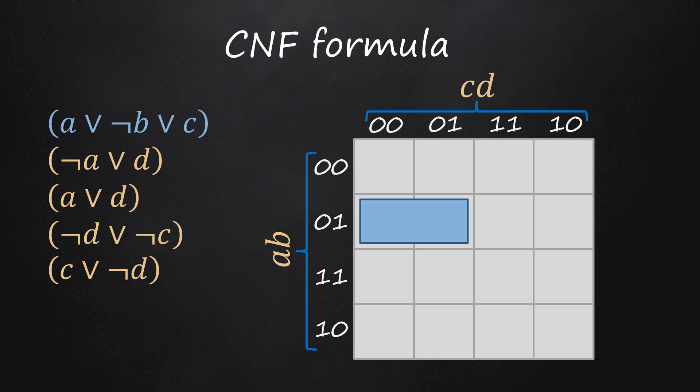The two interpretations that falsify the first clause are covered by the blue rectangle. The second clause is falsified by the four interpretations covered by the green slab.